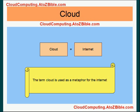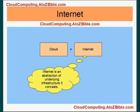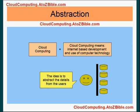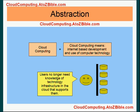The internet is an abstraction of underlying infrastructure that it conceals. So cloud computing basically is internet-based development and use of computer technology. The idea is to abstract the details from the users — users no longer need knowledge of the technology infrastructure in the cloud that supports them.